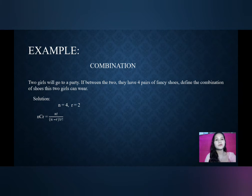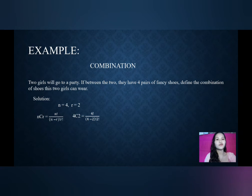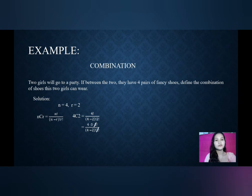So, using the formula nCr is equal to n factorial over the quantity (n minus r) factorial times r factorial, we have 4C2 is equal to 4 factorial over (4 minus 2) factorial times 2 factorial. We have 4 times 3 times 2 factorial over 2 factorial times 2 factorial, and we cancel out the 2 factorial from the numerator and denominator. So, we have 4 times 3 over 2 factorial, which is 12 over 2. Therefore, 4C2 is equal to 6.